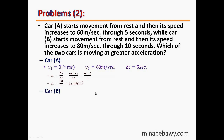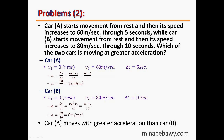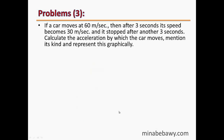For Car B: V1 equals 0, V2 equals 80 m/s, delta-t equals 10 s. Acceleration equals 80 minus 0 over 10 equals 8 m/s squared. Comparing both accelerations, Car A moves with a greater acceleration of 12 m/s squared, while Car B moves with only 8 m/s squared.